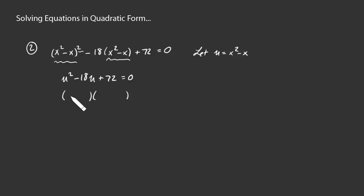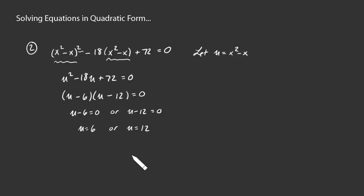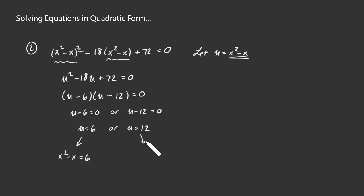We try to factor u squared minus 18u plus 72. Placing u and u in each binomial, to get 72 we try 6 and 12, which conveniently add to 18. So we get (u minus 6)(u minus 12) equals 0, which means either u minus 6 equals 0 or u minus 12 equals 0 — so u equals 6 or u equals 12. But we're solving for x, not u. Since u is x squared minus x, we now have x squared minus x equals 6 or x squared minus x equals 12.